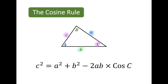After we use the cosine rule to find what our c squared value is, similar to Pythagoras, we find the square root of that value to find c. To use the cosine rule to find a missing side, we need to know two sides of the triangle plus the angle that is opposite the missing side.